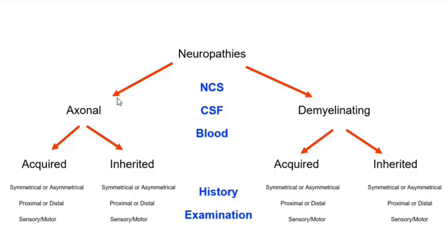I normally divide neuropathies into two categories: axonal and demyelinating neuropathies. Both axonal and demyelinating neuropathies can be subdivided into other categories called acquired and inherited. And if you look at the bottom, it's history and examination. Most of the time, if you take a proper history, you get a decent idea as to what type of neuropathy you're dealing with.